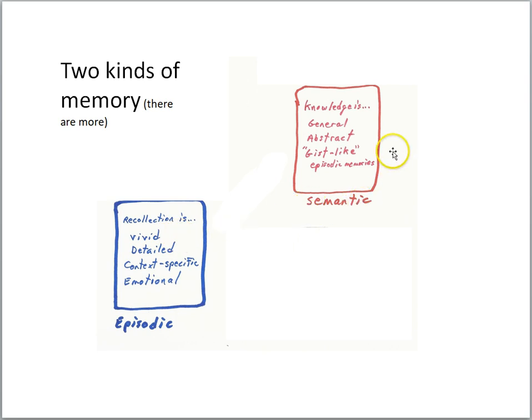By contrast, semantic memory is more just knowledge about the world. It's more general and abstract. Even if the information is about our own past experience, we remember the general idea of what happened without being able to relive it.